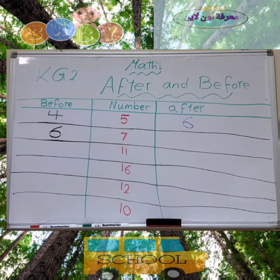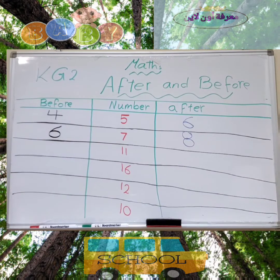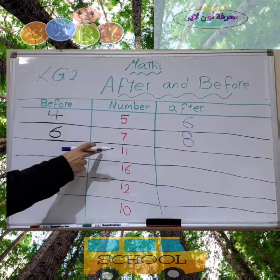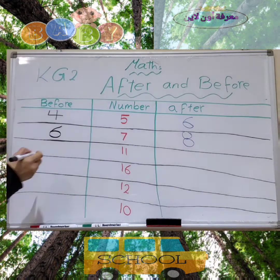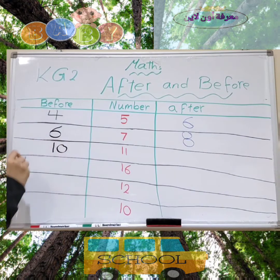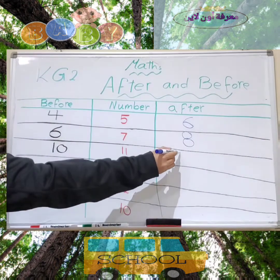We have number 10. What is the number after? Let's count from 1: 2, 3, 4, 5, 6, 7, 8, 9, 10 — and then 11 and 12. The number after 10 is 11.